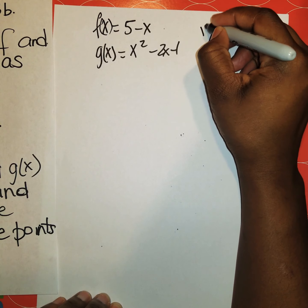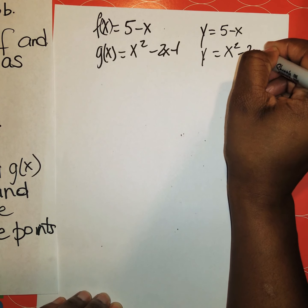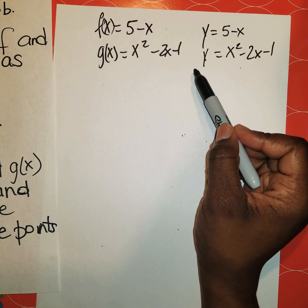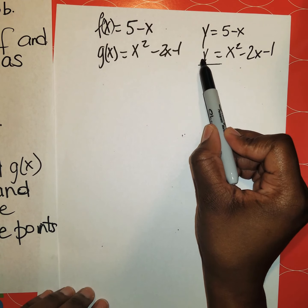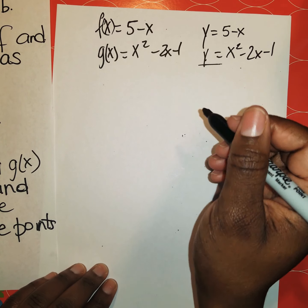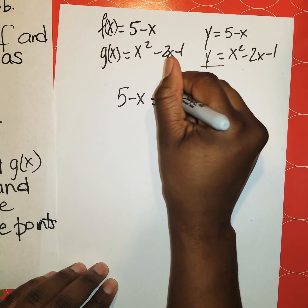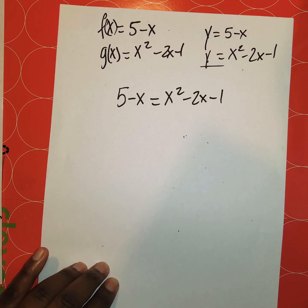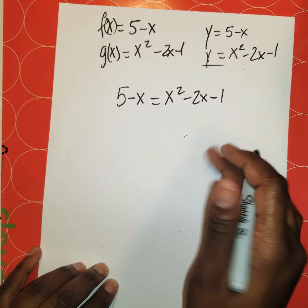For the substitution method, f of x and g of x are both in terms of y, so we rewrite them as: y equals 5 minus x, and y equals x squared minus 2x minus 1. Since both expressions equal y, we can equate them. Where we see y in the second equation, we replace it with the first, giving us: 5 minus x equals x squared minus 2x minus 1.